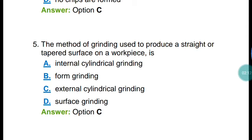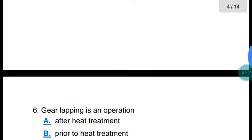Question number five: the method of grinding used to produce a straight or tapered surface on a work piece is called external cylindrical grinding. By using external cylindrical grinding, we can produce a straight or tapered surface on a work piece.